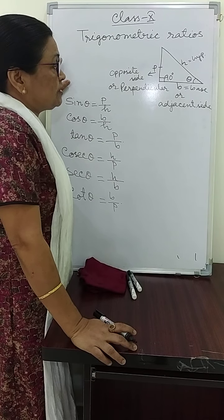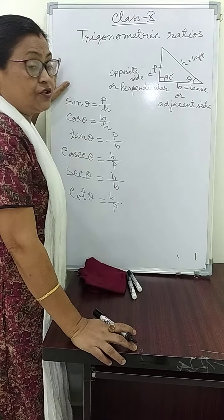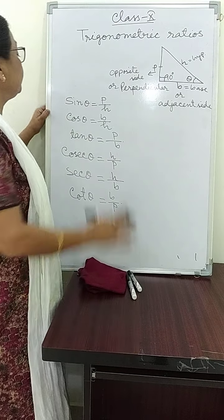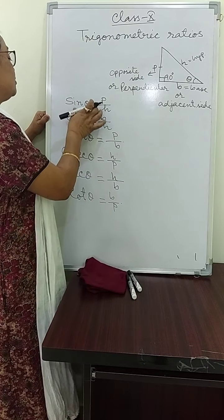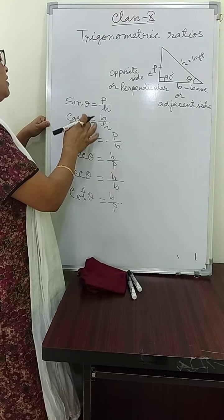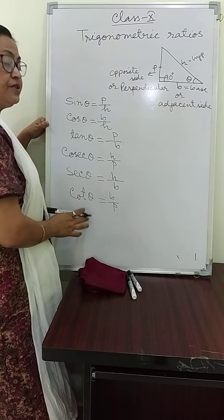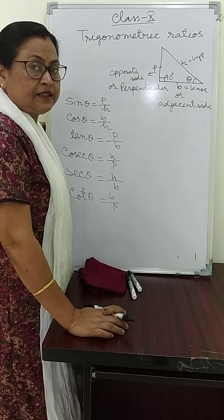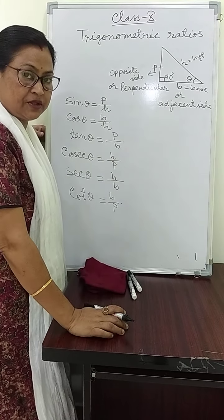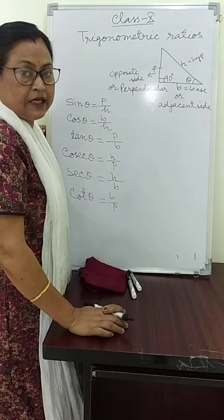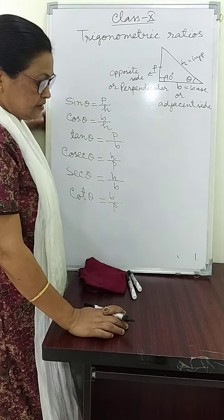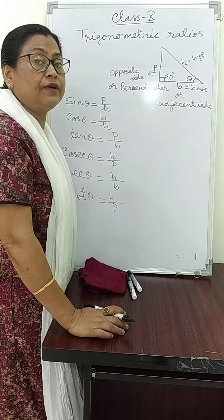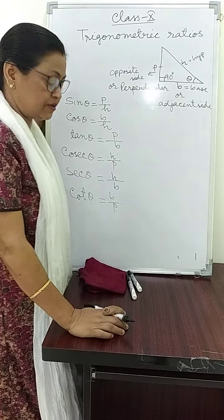So today we will discuss the trigonometric identities involving these trigonometric ratios — that is sine, cosine, tangent, and all of these. There will be an equation, and that equation is called the trigonometric identity. And that equation is true for all values of the angle.